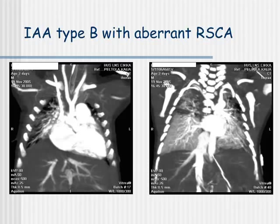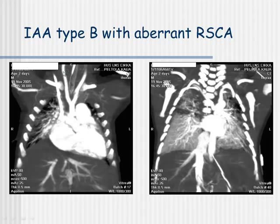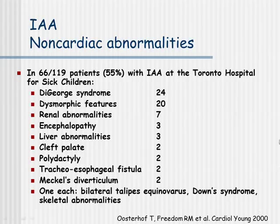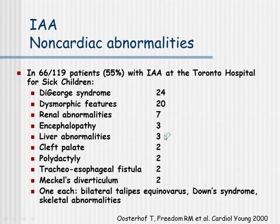Here's another patient of ours who received a CT angio due to late diagnosis and some confusing factors in the diagnostics. It shows the descending aorta, right carotid artery, left carotid artery, and both left and right subclavian arteries arising from the descending aorta. At SickKids Hospital in Toronto, they studied the IAA patient population and found non-cardiac abnormalities in 55% of patients, with DiGeorge syndrome being the most common. Dysmorphic features were found in 20 patients, and renal, brain, liver abnormalities as well as orthopedic anomalies were present in many patients.